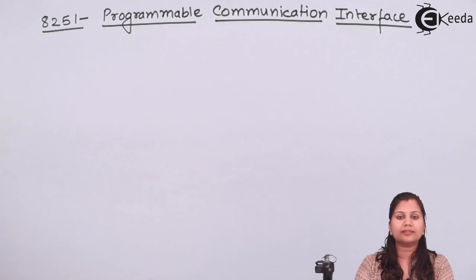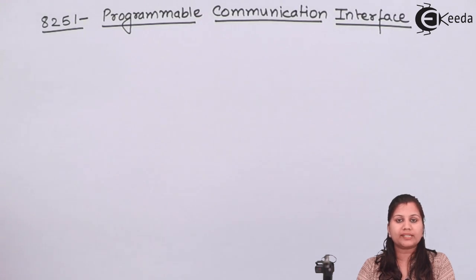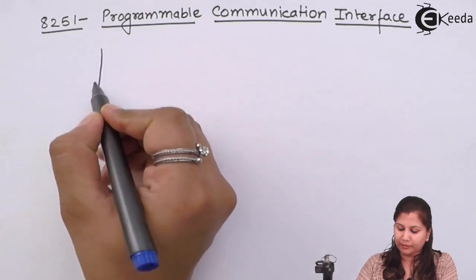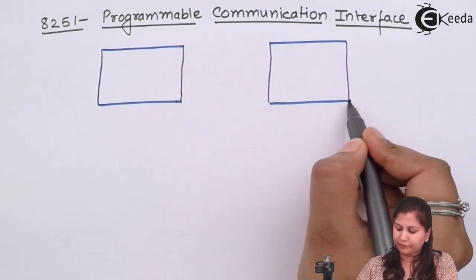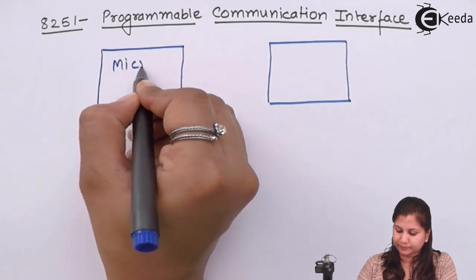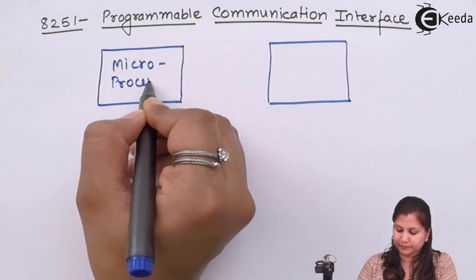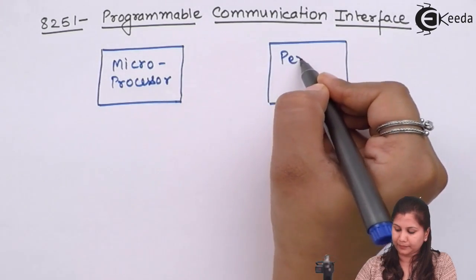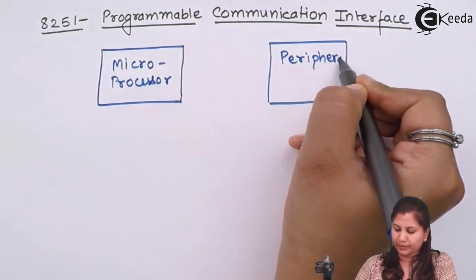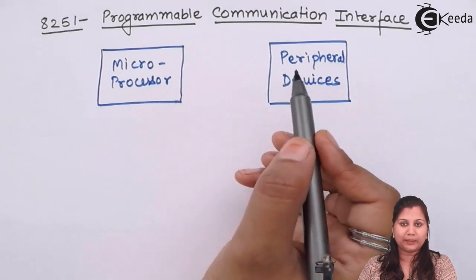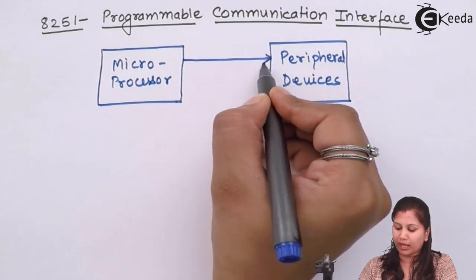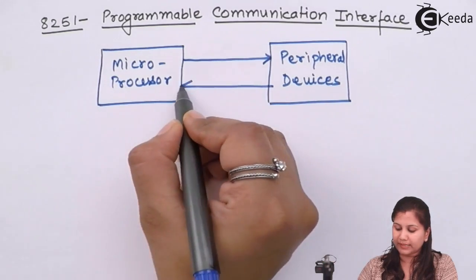When the microprocessor communicates with peripheral devices, it needs to transfer or receive data. So if we have a microprocessor and a peripheral device — peripheral devices can be input/output devices — the microprocessor is either going to transfer the data or receive the data.